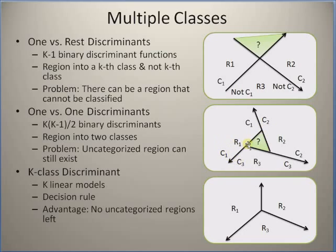For example, one discriminant separates c1 and c3, another separates c2 and c3, and another separates c1 and c2. However, there is still a possibility of having a small region that cannot be classified into any of the individual classes. These problems arise because all discriminant functions are binary and do not consider the third class at any given moment.